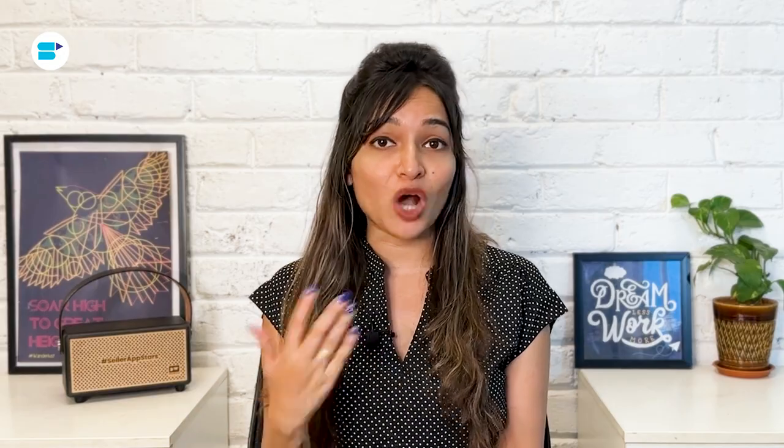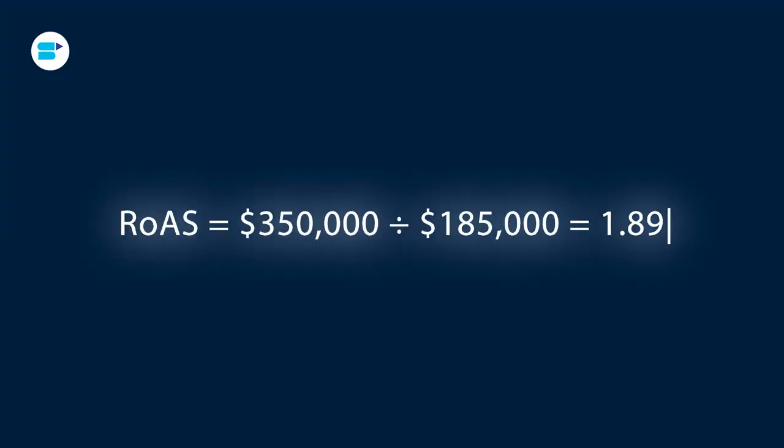Here's the trick to finding your ROAS: take all the money you got from sales and divide it by how much you spent on ads — that number is your ROAS. For example, if you made 350,000 dollars from your ads but spent 185,000 dollars on them, your ROAS equals 350,000 divided by 185,000, which gives you 1.89. Remember, a good ROAS is three or more, so if yours is below that, it's a sign you might need to check things out.